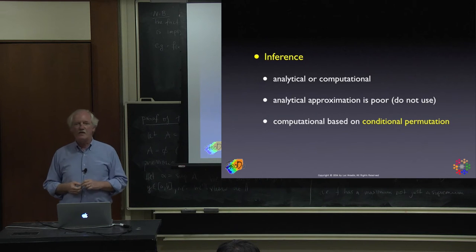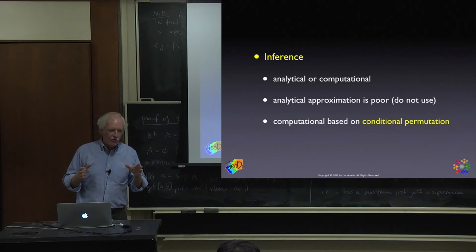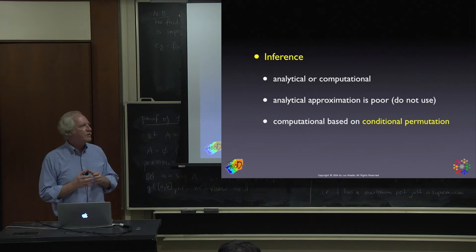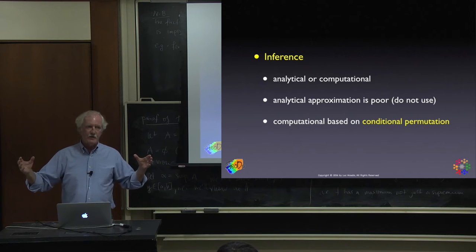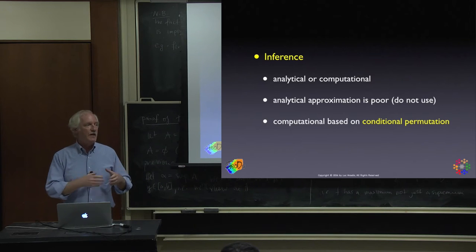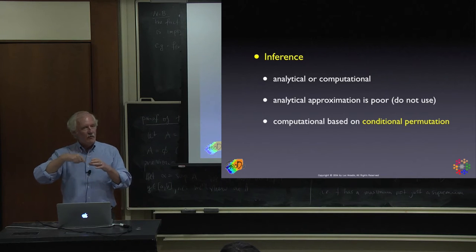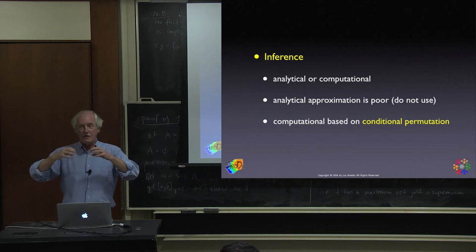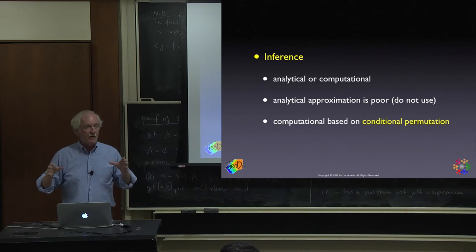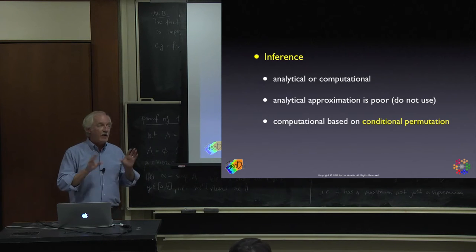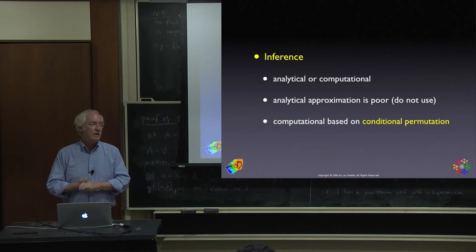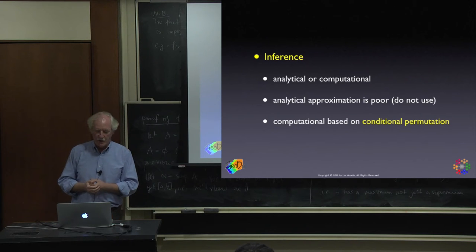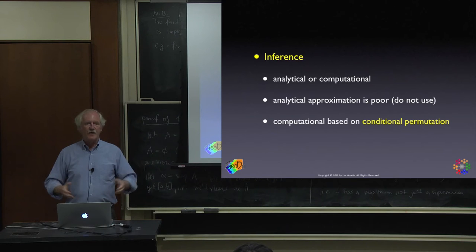The way we solve this, as we often do, is computationally — via the permutation route. The question is how to do this permutation for local statistics. Before, we reshuffled all the data and recomputed one global Moran's I. Now we have as many Moran's statistics as observations. This is called conditional permutation.